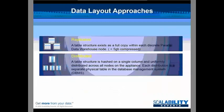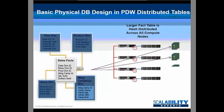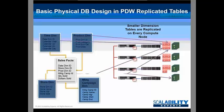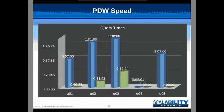The data is laid out quite differently in PDW — it's either replicated or distributed. For fact data, it is spread across every single one of those nodes. For dimensional data, it is actually copied to each node so that each node doesn't have to leave its system to go get data from another compute node. The result is really, really fast queries.